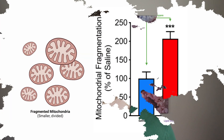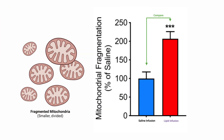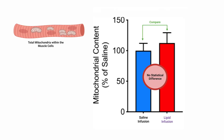However, this is insufficient evidence on its own, so the researchers took images and quantified the number of fragmented mitochondria in the fat-infused group. They found that mitochondrial fragmentation increased significantly. Interestingly, the total mitochondrial amount in the cells was unchanged — just their shape went from long and elongated to small and fragmented.